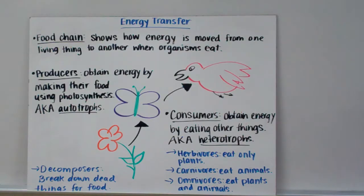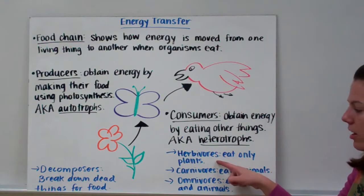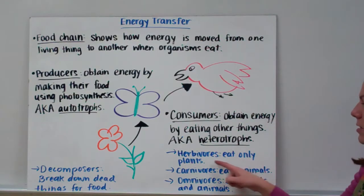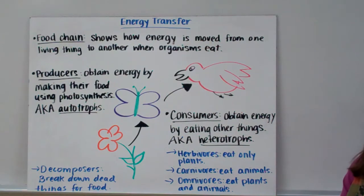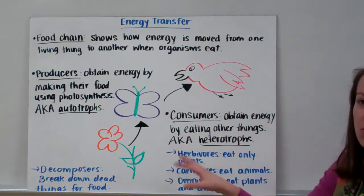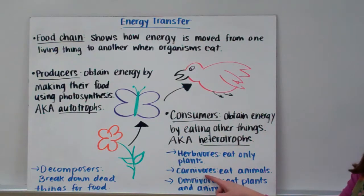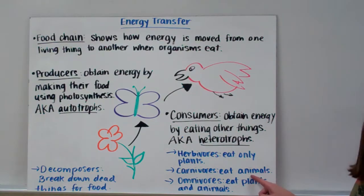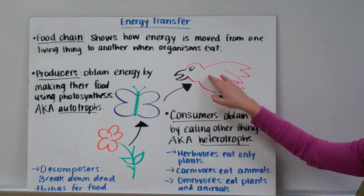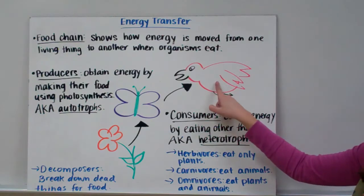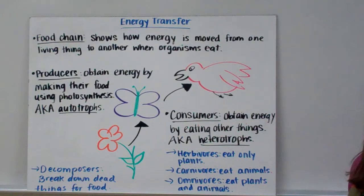There are a couple of consumers you need to know about. The first are herbivores — an herbivore is something that only eats plants. For example, a butterfly does not eat other bugs; it just drinks nectar from a flower, so we say it's an herbivore because it's only eating plants. Carnivores are organisms that only eat other animals. For example, if this bird only eats butterflies and not berries, we'd say it's a carnivore. Tigers are carnivores too — they like to eat meat.